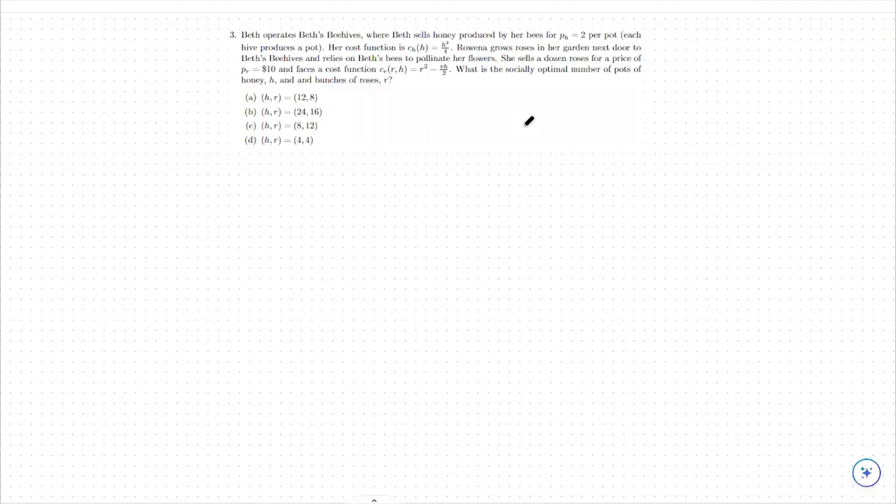Hello. Today we're going to go over externalities. An externality is anytime an agent in the economy is behaving in such a way that they impact other agents in the economy without that action being accounted for. Externalities can be good or bad, and as such, we label externalities as positive or negative externalities.